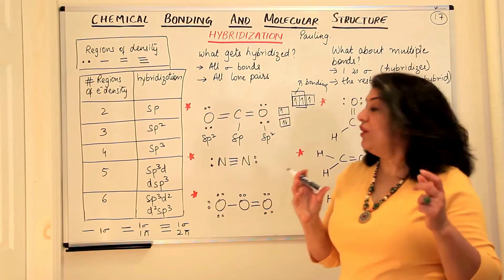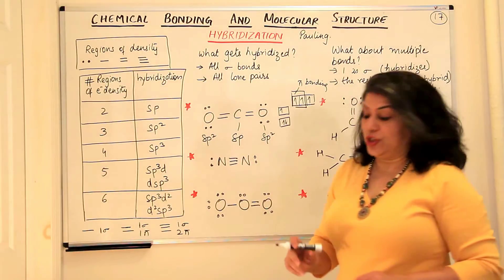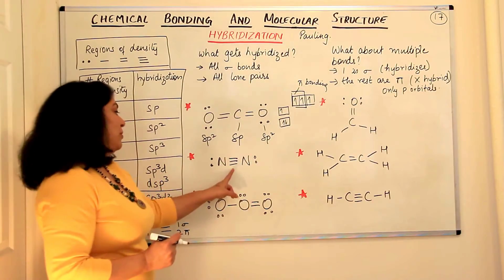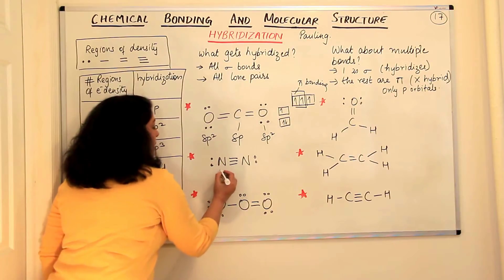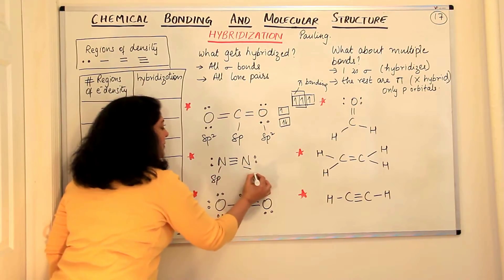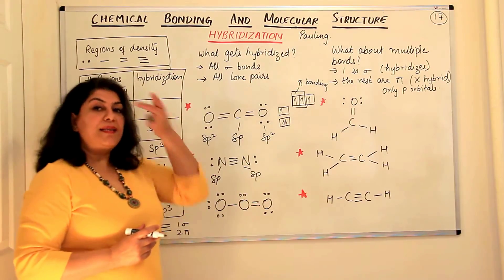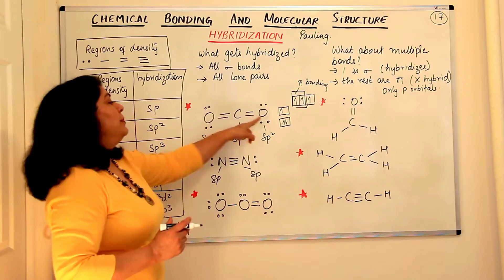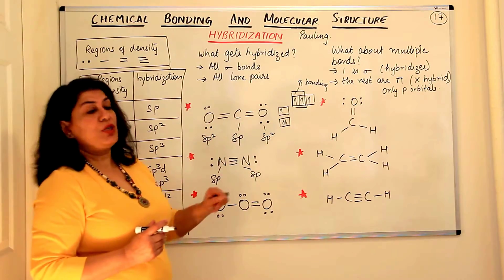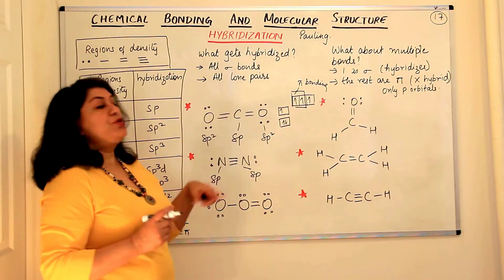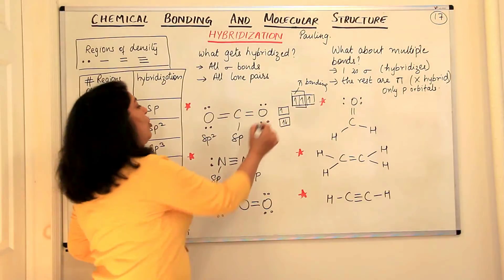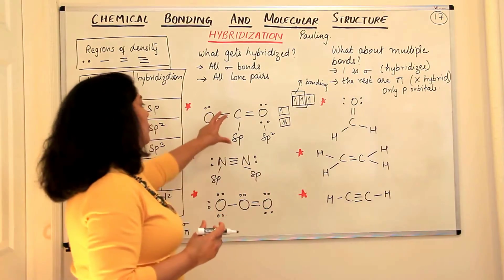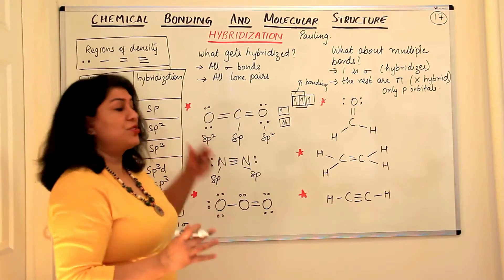Now in the nitrogen molecule (N₂), nitrogen has one lone pair and one triple bond. Out of the triple bond, only one is a sigma bond, so we count two regions of density. The hybridization of nitrogen is sp. Whenever you have sp hybridization, the shape around that atom is linear. CO₂ is a linear molecule, and the sp2 hybridized oxygen's lone pairs do not contribute to the shape of the molecule.